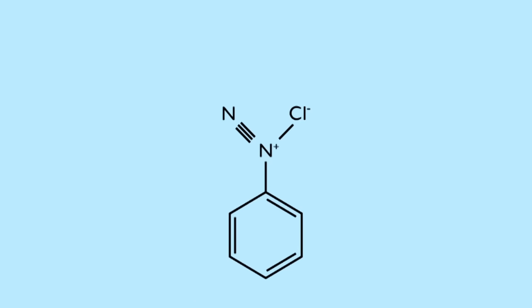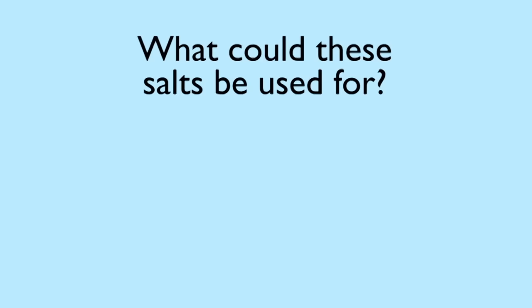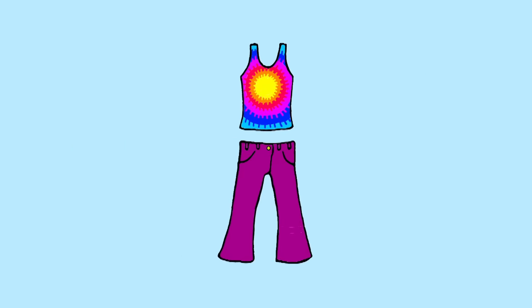Here's another more complicated salt with nitrogen in the cation. It's part of a family called the diazonium salts, which are all brightly coloured. Can you think what they might be used for? Pause and have a think, then resume. The answer is, they're used for dye pigments to colour our clothes.